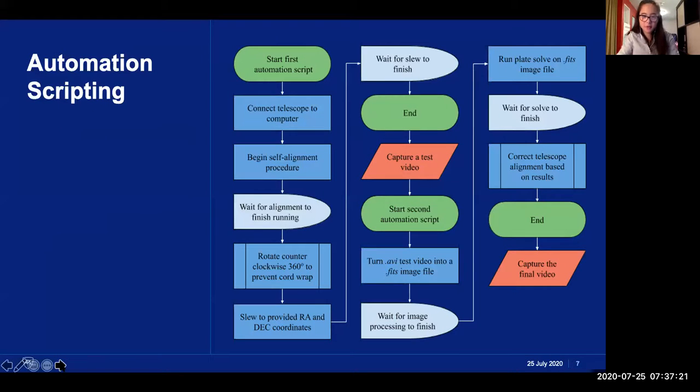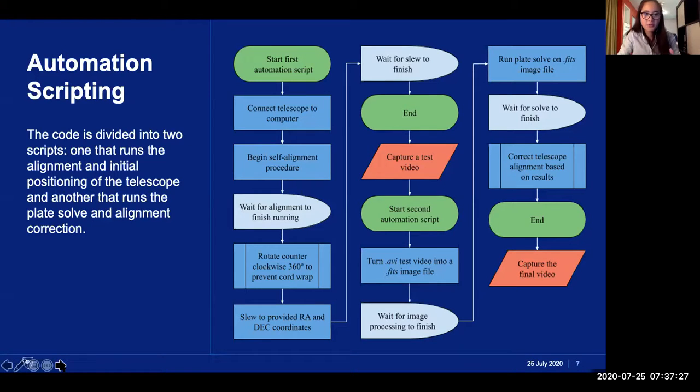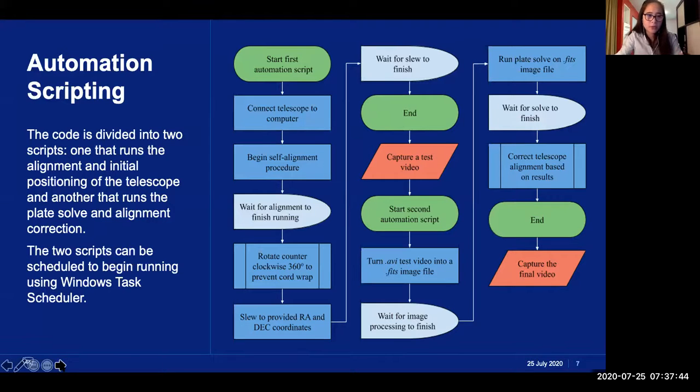So, here's a quick overview of what the scripts I wrote actually accomplish. At the most broad level, there are two scripts which group together related actions that need to happen at around the same time. The timing for the start of the first script and for the start of the second script can be set through Windows Task Scheduler, which is a program that comes built in on any Windows computer. So, after the first script is started, it connects the telescope to the computer and begins the auto-align procedure, which are both actions that are conducted through the CPWI software, using regular AutoIt scripting.